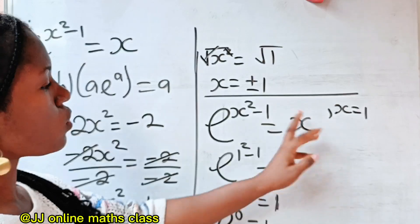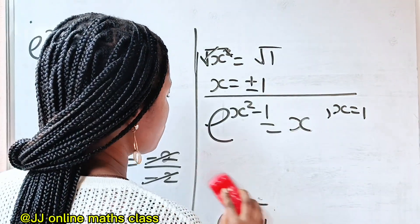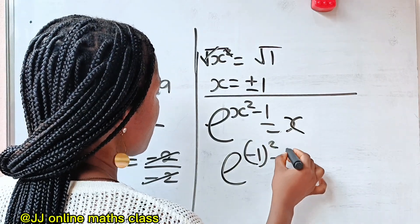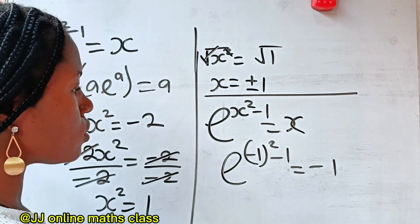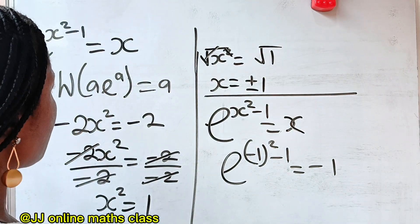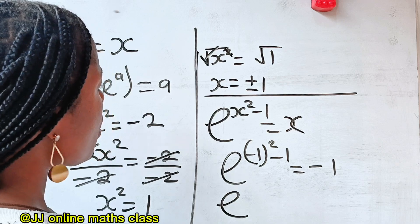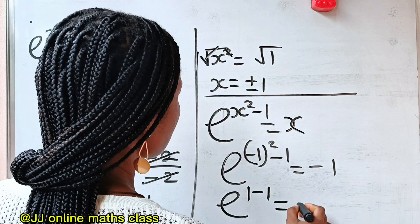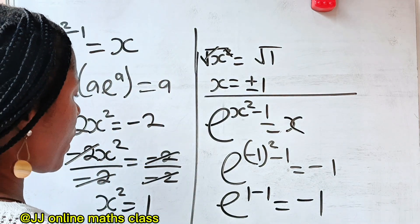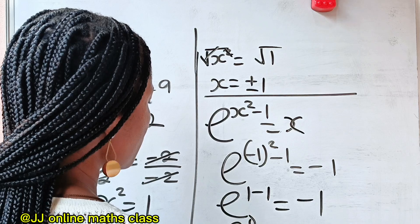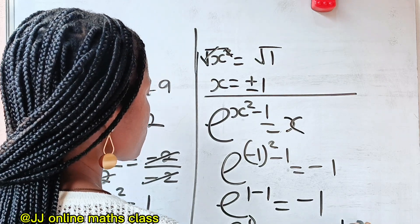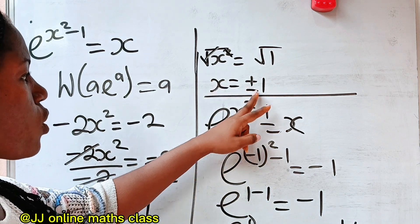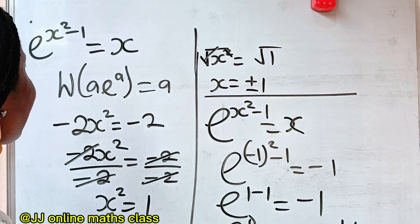When x equals minus 1, we have e to the power of minus 1 squared minus 1 equal to minus 1. Minus 1 squared gives us 1, so we have 1 minus 1 equal to minus 1, meaning e to the power of 0 equals minus 1. But 1 is not equal to minus 1, so x equals minus 1 is rejected. Therefore the answer is x equals positive 1. Thank you so much for watching, see you in my next video.